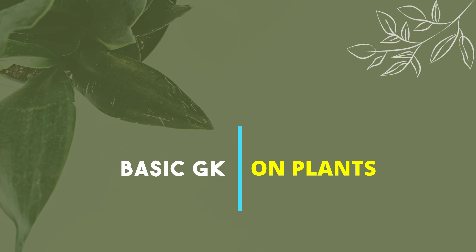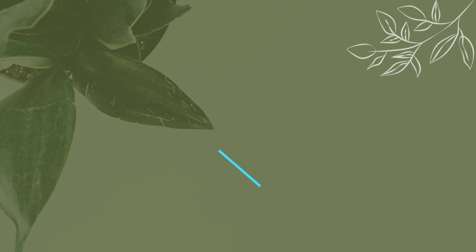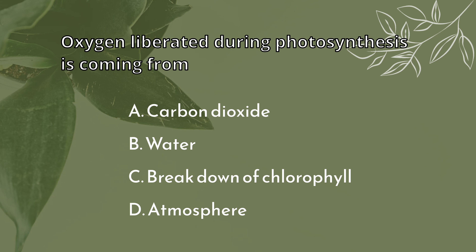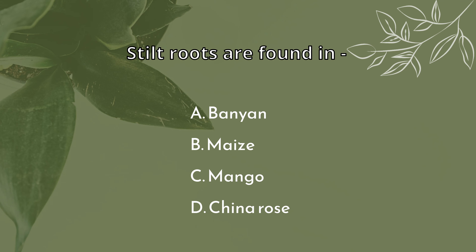Today, we will discuss basic general knowledge on plants. Trees are leafless for a shorter or longer season of the year in scrub jungle forest. Oxygen liberated during photosynthesis is coming from water. Stilt roots are found in maize.